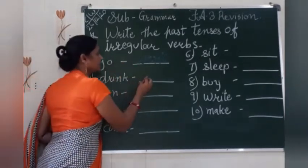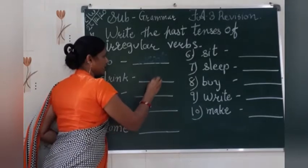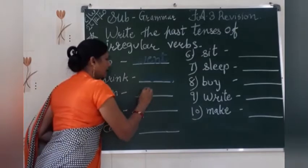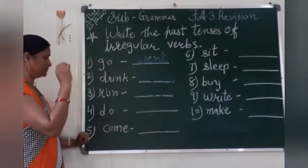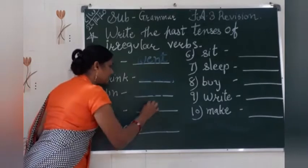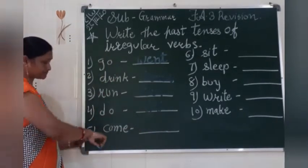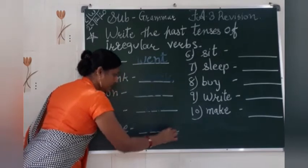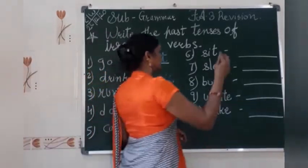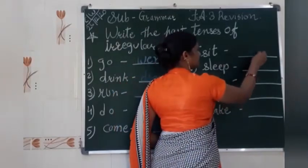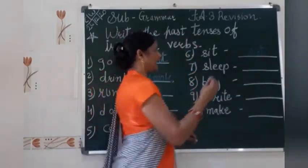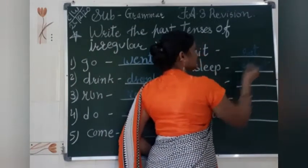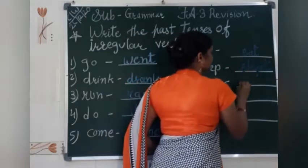Now 'drink' — past tense is 'drank', D-R-A-N-K. 'Run' — past tense is 'ran', R-A-N. 'Do' — past tense is 'did', D-I-D. 'Come' — past tense is 'came', C-A-M-E. 'Sit' — past tense is 'sat', S-A-T. 'Sleep' — past tense is 'slept', S-L-E-P-T.